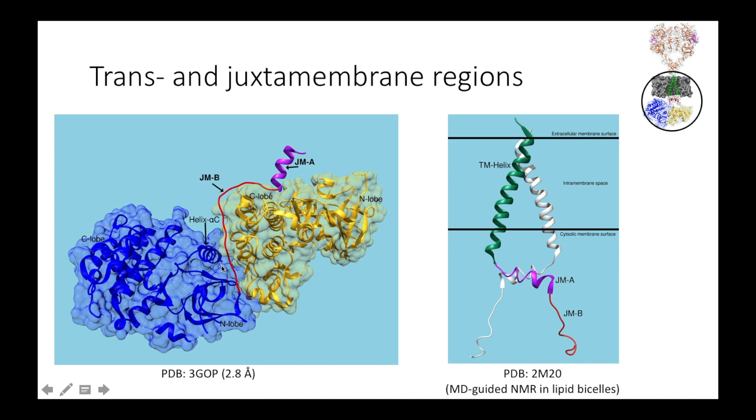On the right is a proposed structure of the transmembrane and juxtamembrane regions of the EGFR dimer. In white is one EGFR monomer, and in green and purple is the other. The JMA regions form this interesting anti-parallel helix interaction, and the transmembrane helices interact between pairs of glycine residues that I will show in the following slides.